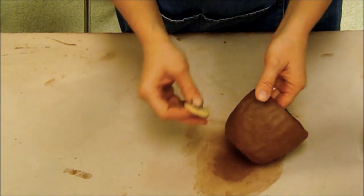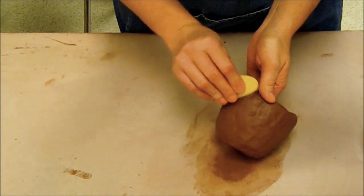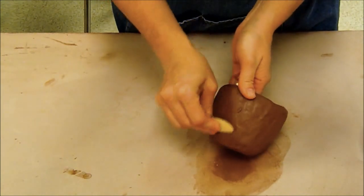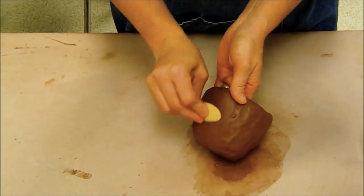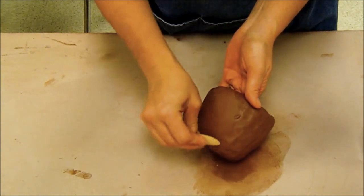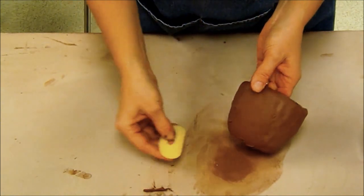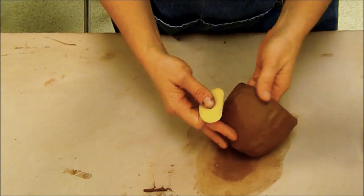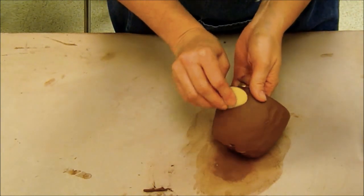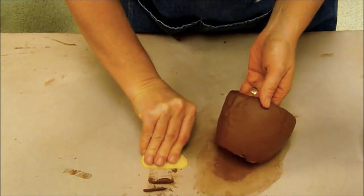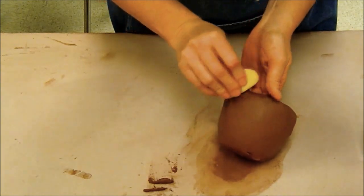To smooth I'm going to use a yellow rib. Now I chose to use one of the very small ribs because the small ones will fit inside my pot. When I rib I will hold my hand on the inside of the cup and I rib pushing up against my fingers.